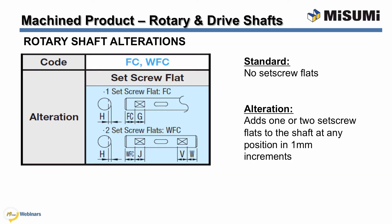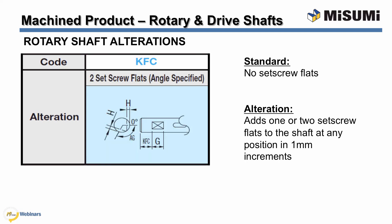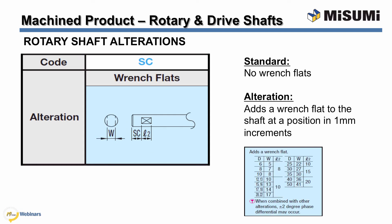One or two set screw flats can be added anywhere along the length of the shaft. The position and width of the flat are configurable in 1 millimeter increments. The flat prevents the round surface of the shaft from being dimpled when clamping the set screw in place and adds additional surface area for better clamping force. Misumi also offers an alteration that allows you to add two set screw flats at an angle in the same location, configurable in 15 degree increments from each other. Wrench flats can be added in a position anywhere on the shaft in 1 millimeter increments, with widths predetermined based on the diameter, allowing you to easily grip the shaft with a wrench when additional tightening is required.